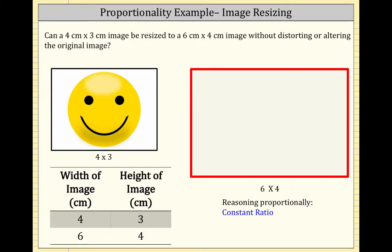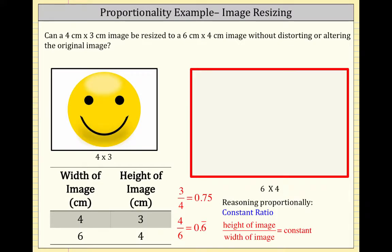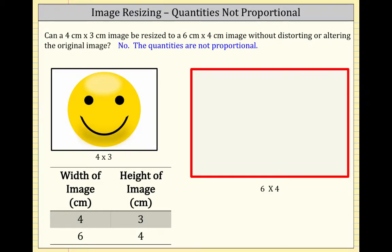Lastly, let's look at the constant ratio. We're going to look at the height of the image over the width. If you can resize the image without distorting it, that ratio will remain constant. So: 3 over 4 is 0.75, but 4 over 6 is 0.6 repeating. These are not the same constant ratio. So again, you cannot resize it without distorting or altering it — because the quantities are not proportional.